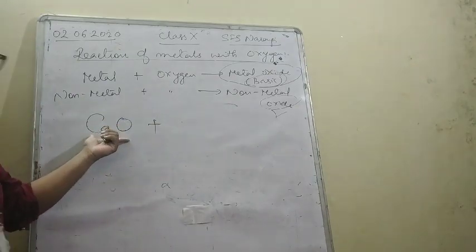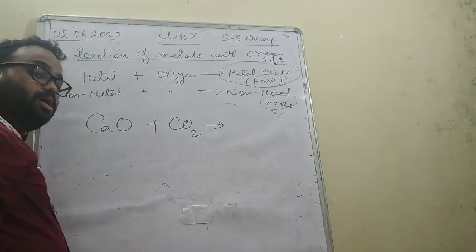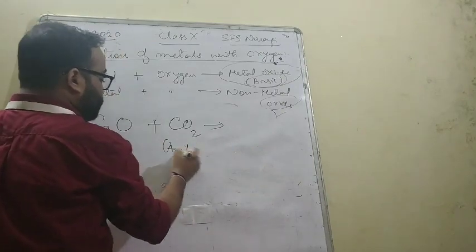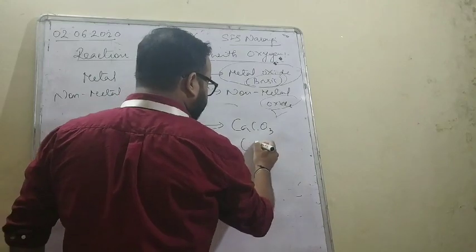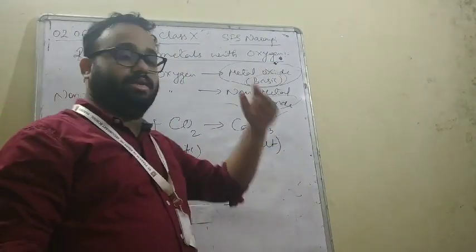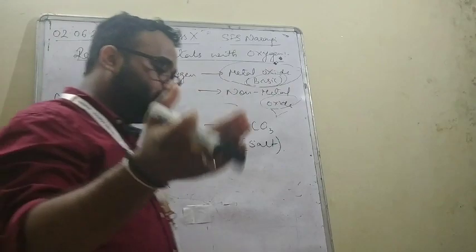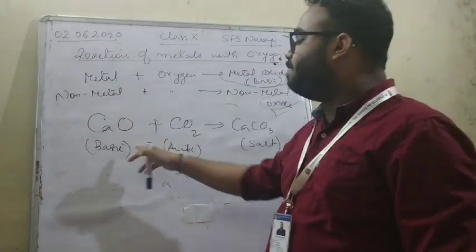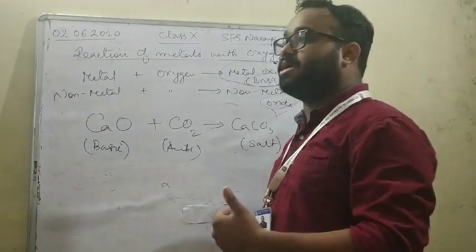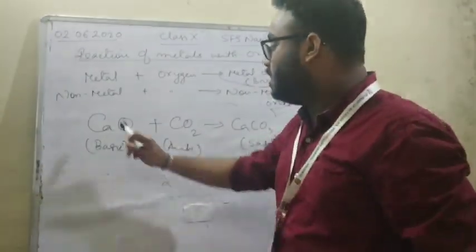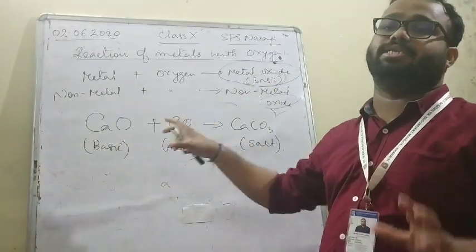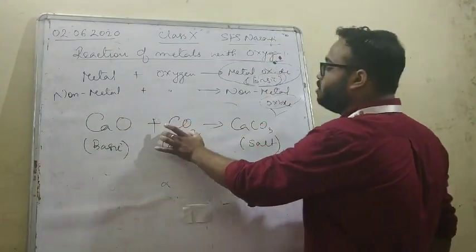If I take calcium oxide, which is basic in nature, and carbon dioxide, which is acidic in nature, they will react to give CaCO₃ — which is nothing but a salt, calcium carbonate. You may ask why water is not formed. Because acid plus base gives salt plus water, but here they are not purely acid or purely base. Pure acid plus pure base gives water because they have H and OH; here you have no H and OH, so you don't get water. So metallic oxide plus non-metallic oxide gives you a salt.